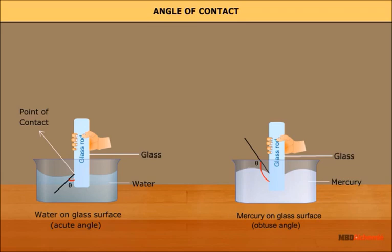Here the cohesive force of liquid molecules is smaller than the adhesive force between liquid and solid molecules, so the liquid wets the solid. Water on glass or plastic, and kerosene on glass or any solid surface, are examples where the angle of contact is acute. Hence, the value of the angle of contact determines whether a liquid will spread on a solid surface or form droplets on it.